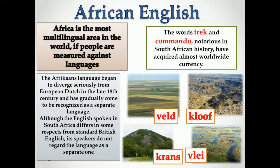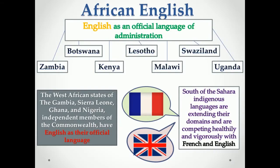Both British and Dutch traders followed in the wake of 15th-century Portuguese explorers and have lived in widely varying war and peace relationships ever since. In the early 1980s, Afrikaners outnumbered British by 3 to 2. The Afrikaans language began to diverge seriously from European Dutch in the late 18th century. Although the English spoken in South Africa differs in some respects from standard British English, speakers do not regard it as a separate language. They use many Afrikanerisms such as kloof, kraal, veld, and vlei, and occasionally employ African names for local animals and plants. The words 'trek' and 'commando' have acquired almost worldwide currency.